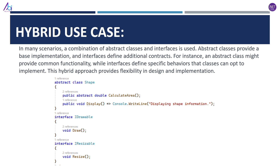Let's talk about hybrid use cases. In many scenarios, a combination of abstract classes and interfaces is used. The abstract class provides a base implementation while interfaces define additional contracts. For instance, an abstract class might provide common functionality while interfaces define specific behaviors that classes can opt to implement. This hybrid approach provides flexibility in design and implementation.